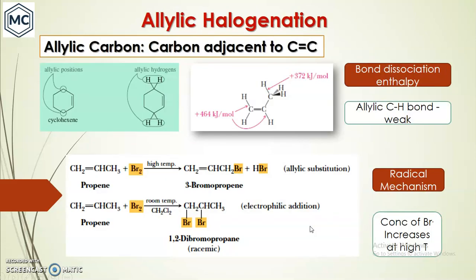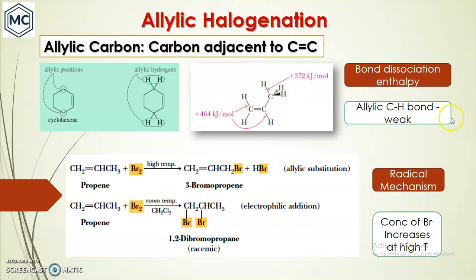The next topic is allylic halogenation. An allylic carbon is a carbon adjacent to a C=C double bond. This position is called the allylic position. Allylic hydrogen means the hydrogen on that allylic carbon. The bond dissociation energy of allylic C-H bonds is weak - allylic hydrogen has less energy compared to vinylic hydrogen, so the allylic C-H bond is weak.